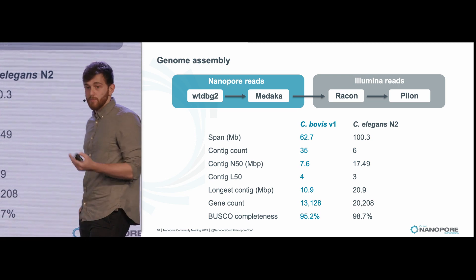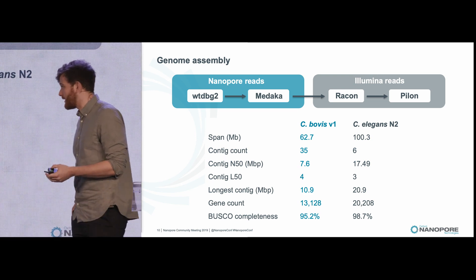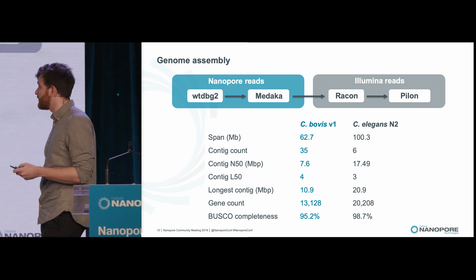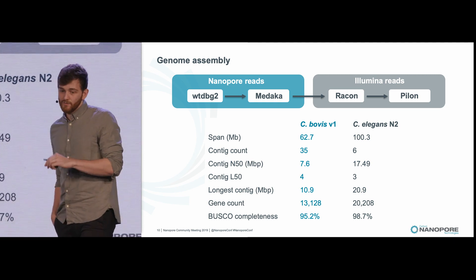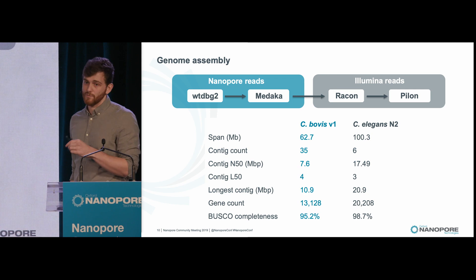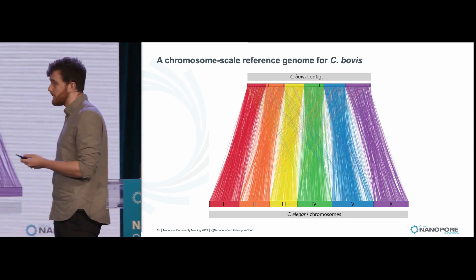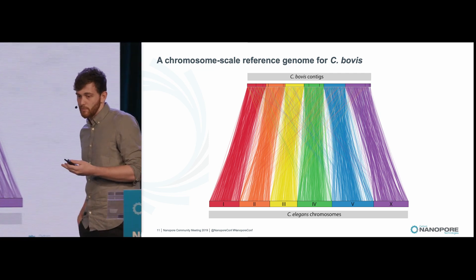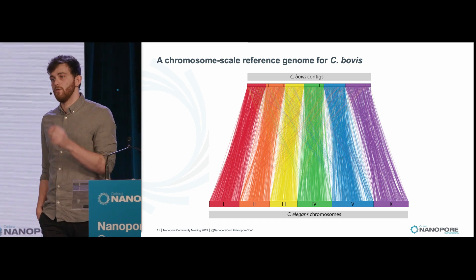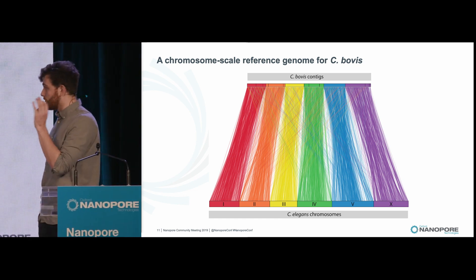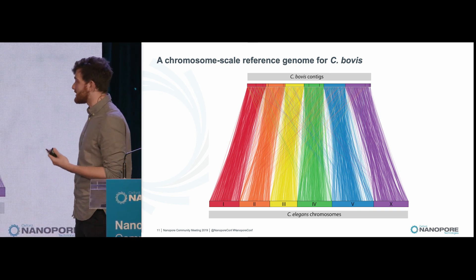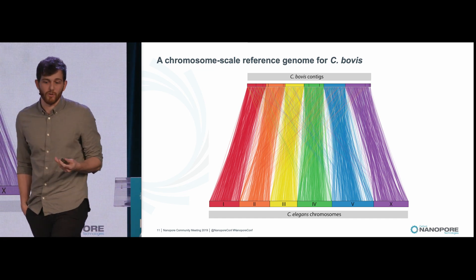The genome is pretty small — only 62 megabases — assembled into 35 contigs with an N50 of 7.6 megabases. The really exciting thing for me is that these worms have six chromosomes, and half the assembly is assembled into just four contigs. If you take these large contigs and compare them to the C. elegans genome — where each line represents an orthologous gene pair — you find that two of the contigs represent completely assembled chromosomes. Really not bad for an assembly generated from data produced in rural Kenya.